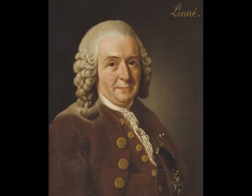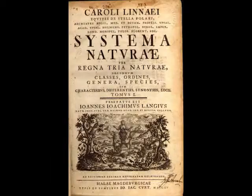Nach dem System von Linné gibt es diese sieben Kategorien, und jedes Lebewesen wird in eine dieser Kategorien eingeteilt. Das System von Linné hat einige große Schwächen. Linné war kein Anhänger der Evolution, sondern glaubte an die Konstanz der Arten. Er ordnete die verschiedenen Tiere und Pflanzen nach ihren Merkmalen; evolutionäre Ursprünge kamen ihm dabei nicht in den Sinn.